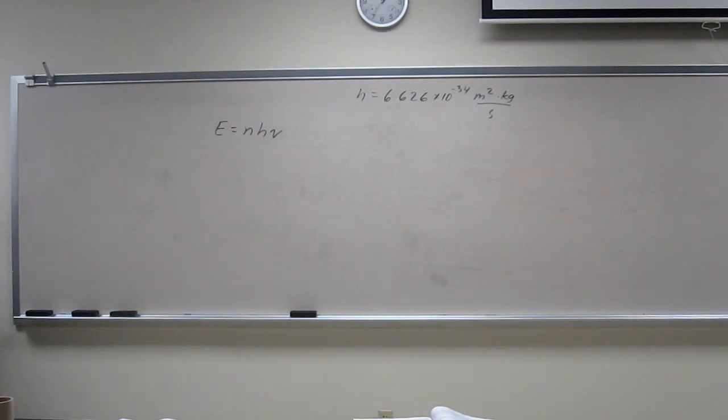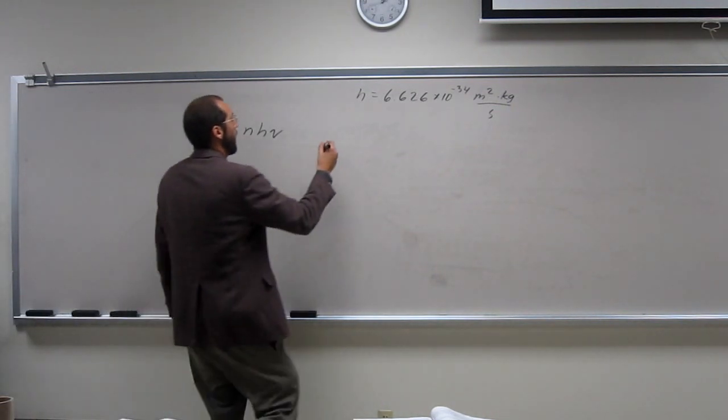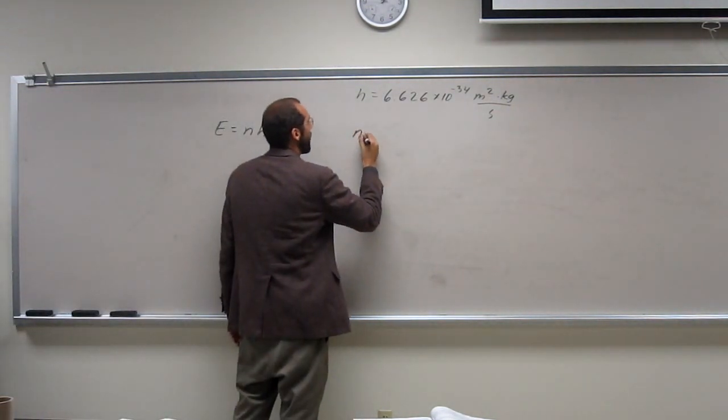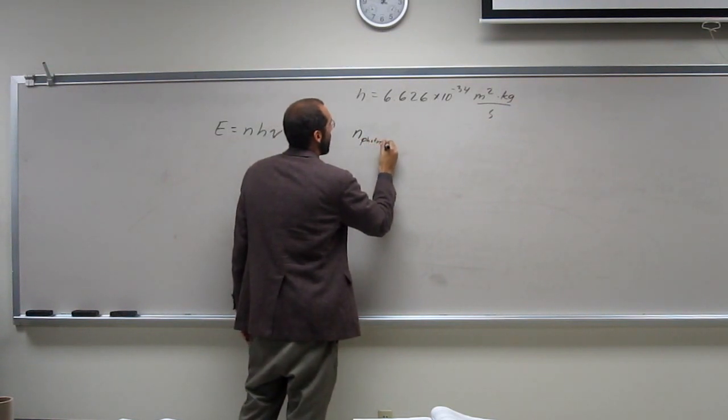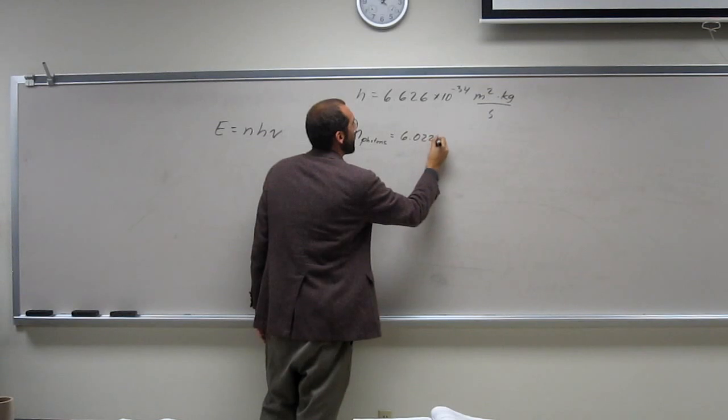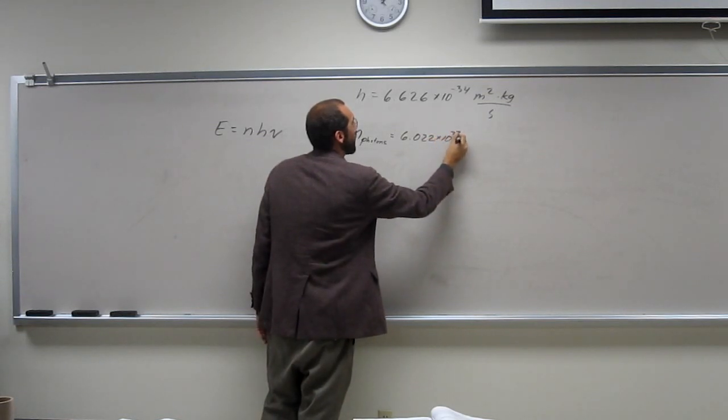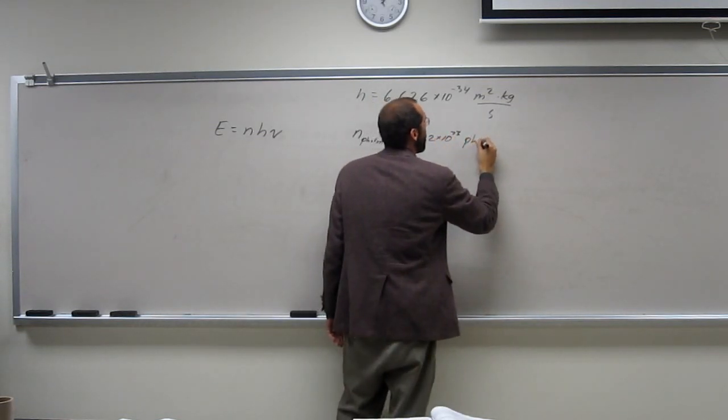So we're looking for the energy associated with a mole. So the other thing is a mole, right? So the number of photons is going to be 6.022 times 10 to the 23rd photons.